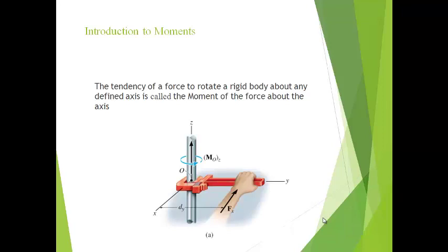There are two cases for the moment. First case: either F equals 0 or ON equals 0. If F equals 0, there will be no force. If ON equals 0, the line of action of the force passes through the point about which moment is taken. So, the tendency of a force to rotate a rigid body about any defined axis is called the moment of the force.